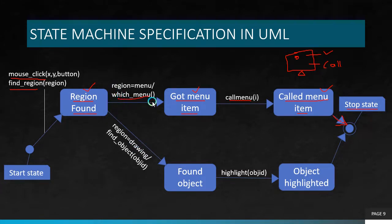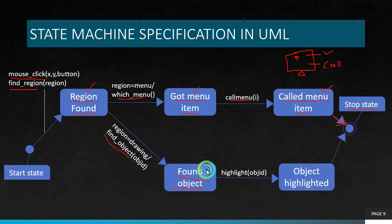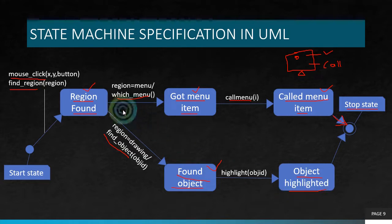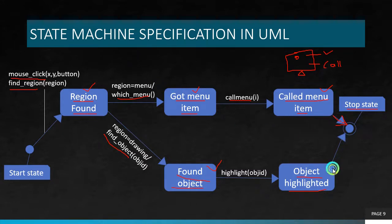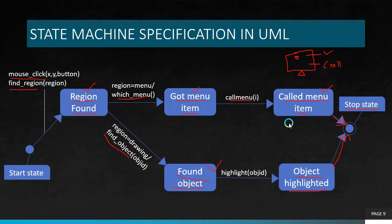You can have any number of branches or other scenarios. For example, instead of finding the menu, I might find an object by calling find_object. After finding the object, I highlight it by calling highlight_object(id), and the object is highlighted. You can have any number of branches — other behavioral descriptions can be included in the state machine specification. After all branches, we reach the stop state. This is the state machine specification in UML.